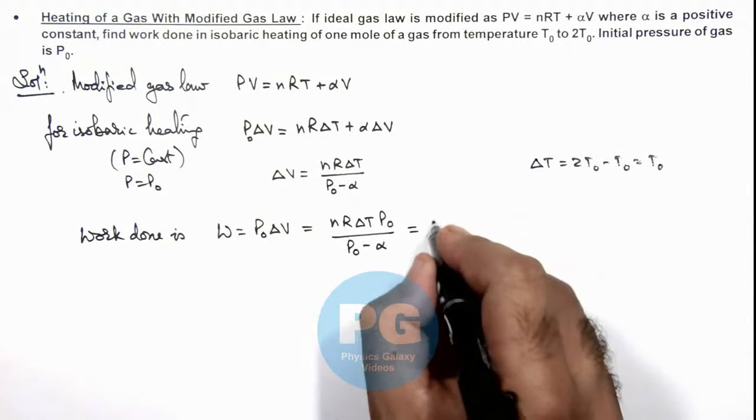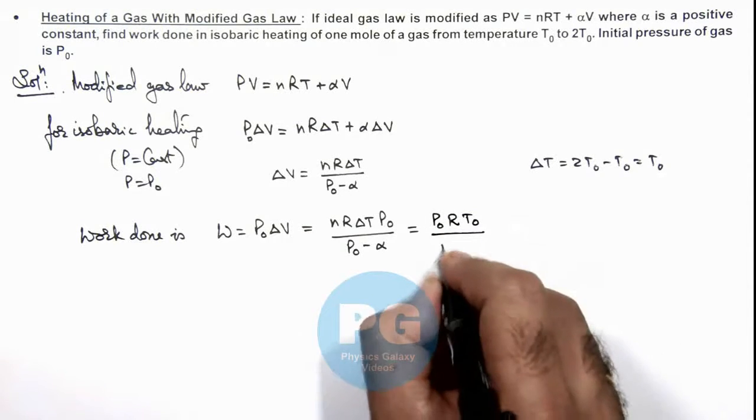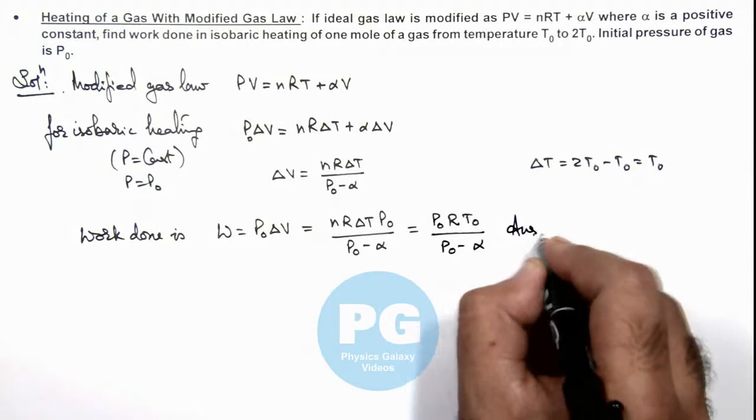So the result we are getting is P₀RT₀/(P₀ - α). That is the result of this problem.